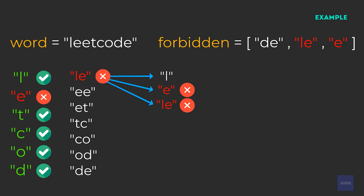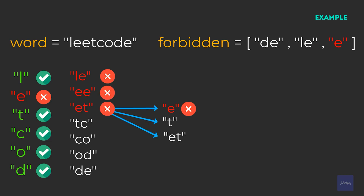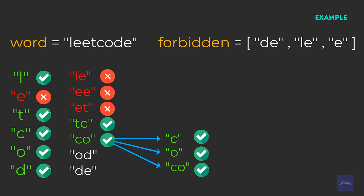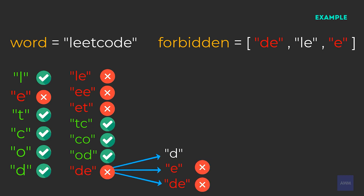Substring EE is also invalid because E is a substring of EE, and E is in forbidden. ET is not valid because of the E substring. TC would be valid because all of its substrings — T, C, and TC — don't exist in forbidden. CO is valid, and OD is valid.